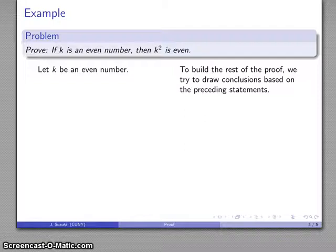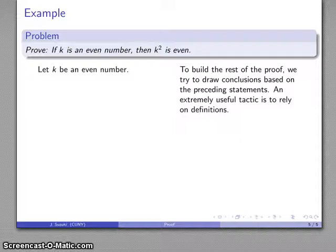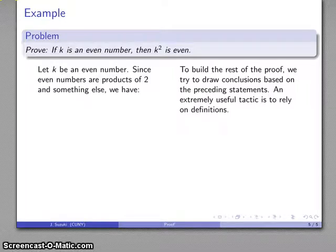Now to build the rest of the proof, we need to draw logical conclusions based on the earlier statements. An extremely useful tactic is to rely on the definitions. Part of the reason for that is the definitions give us a built-in framework of what we can say without really having to go into too much justification for it. So k is an even number. Well, what does that mean? By definition, even numbers are products of 2 and something else, so that tells me k is 2 times something.